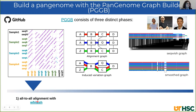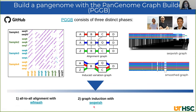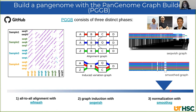For the first step, we use WFmash to align all sequences against each other. For the second step, we use seqwish. Where we have two similar regions and one different region, these regions are collapsed into one region, and seqwish considers all possible alignments between sequences and induces a variation graph. The third step is smoothxg — with this tool, we sort the graph and apply a POA algorithm to obtain a smooth and normalized graph.